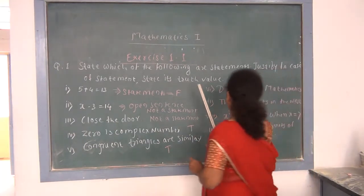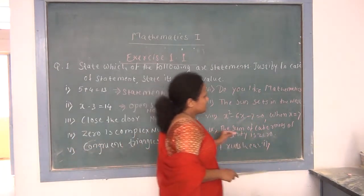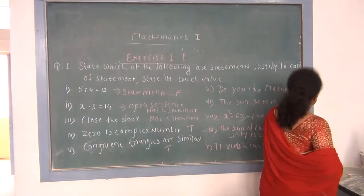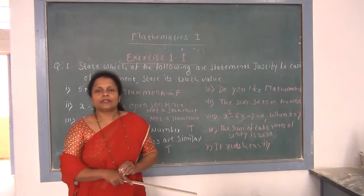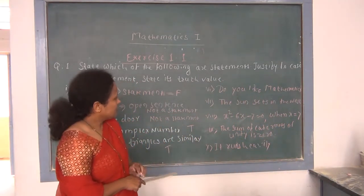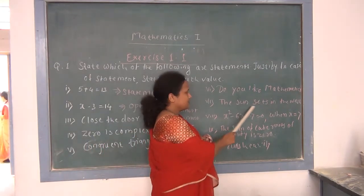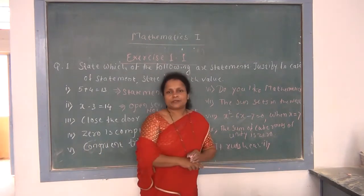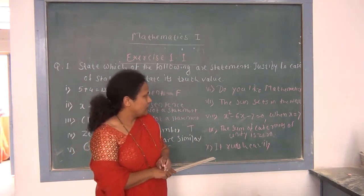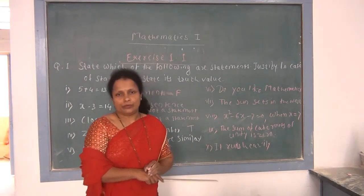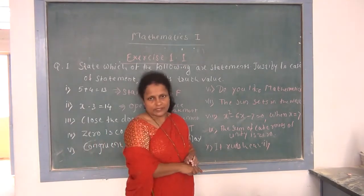Observe the sixth sentence: 'Do you like mathematics?' It has a question mark, so it is not a statement. Seventh: 'The sun sets in the west.' This is a declarative sentence, so we can find its truth value — it is true, because the sun sets in the west.